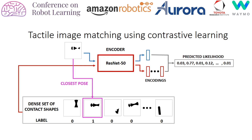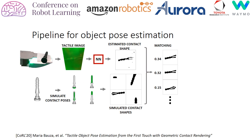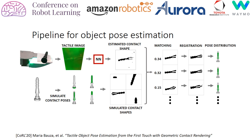Finally, once we have those pose distributions, we take an additional step where we note that our contact shapes are images that can be transformed into point clouds. Therefore, we can use registration techniques to locally improve the transformation for the pose of the object with respect to the sensor. After all, we get pose distributions that can be used in several settings, including incorporating constraints from external perception systems or multiple contacts.